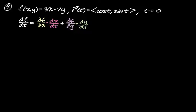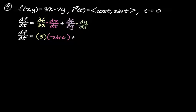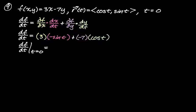Now we just find values and plug in. The partial of f with respect to x is just 3. x = cos t, so dx/dt = -sin t. The partial of f with respect to y from 3x - 7y is -7, and dy/dt from y = sin t is cos t. Evaluating at t = 0: 3 times (-sin 0) = 0, plus -7 times (cos 0) = -7. So overall we get -7.